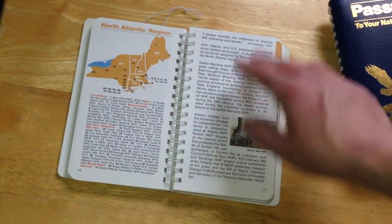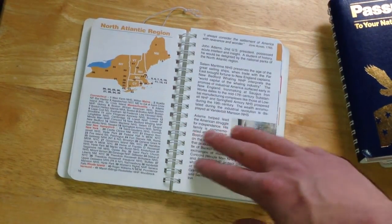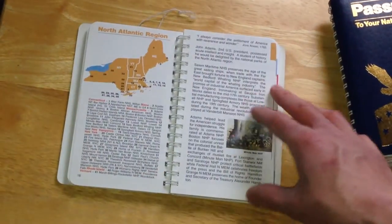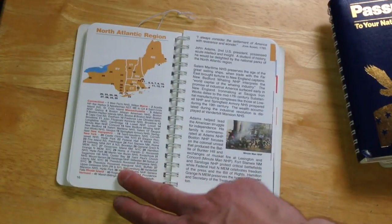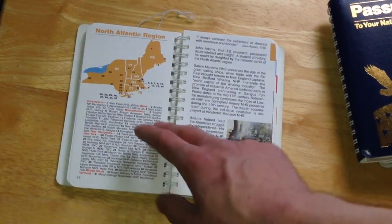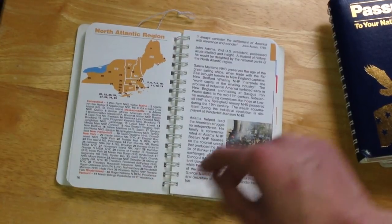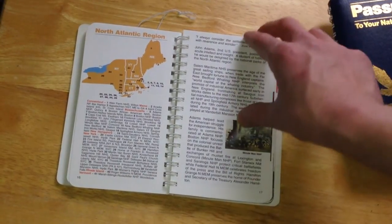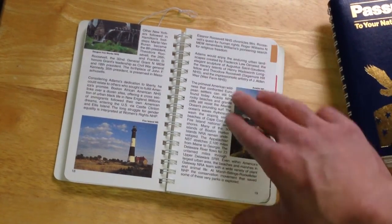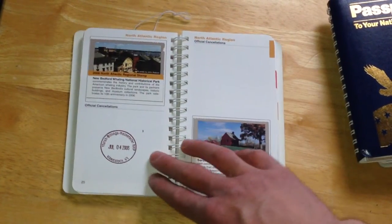This gets into the first region, the North Atlantic region. Here it has a listing of all the states as well as each national park within the state, some relevant information about the biggest national parks, or the most notable I should say.